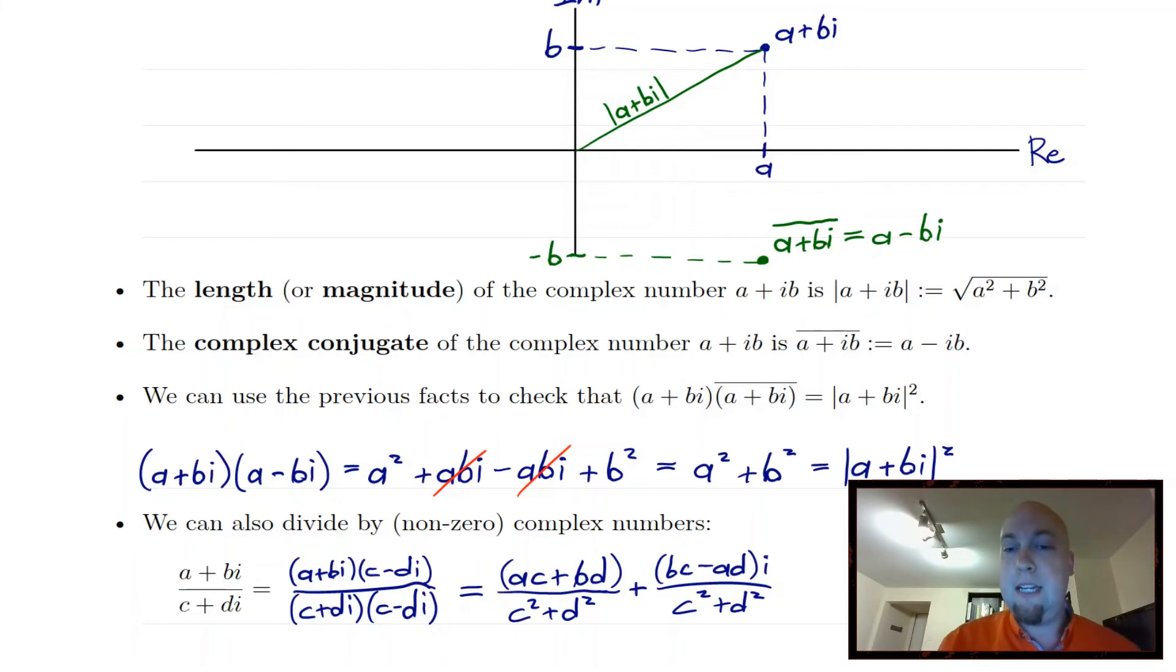So for example, you can just check that if you take a number and multiply by its own complex conjugate, well, just work through the algebra here. And it turns out you get the length of that complex conjugate squared, you get magnitude squared.